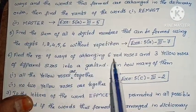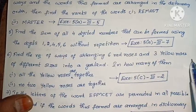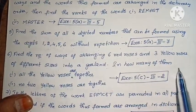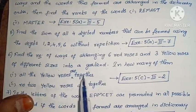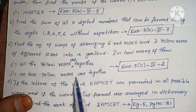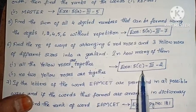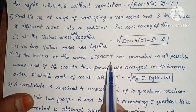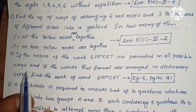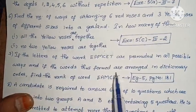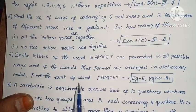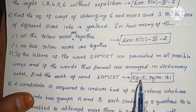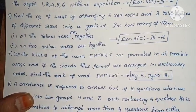Next: find the number of ways of arranging 6 red roses and 3 yellow roses of different sizes into a garland; in how many of them are all the yellow roses together, and in how many are no two yellow roses together (Exercise 5, Roman III, second one). Next: if the letters of the word MSET are permuted in all possible ways and arranged in dictionary order, find the rank of MSET (Example 5, page 181). This question appears frequently in question papers.